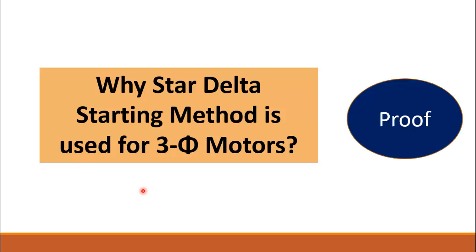The emphasis of this video is the proof which I am going to do to show you that in the star configuration, this current is less than the delta configuration. If you are interested in the wiring diagram of the star delta starter, you can refer to the link which is shown at the top of your screen.